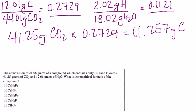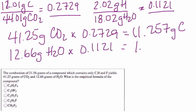And the significant figures aren't as important just yet. You want to wait until the very end to round. Then we have 12.66 grams of H2O times 0.1121 and that will be equal to 1.4191 grams of hydrogen.